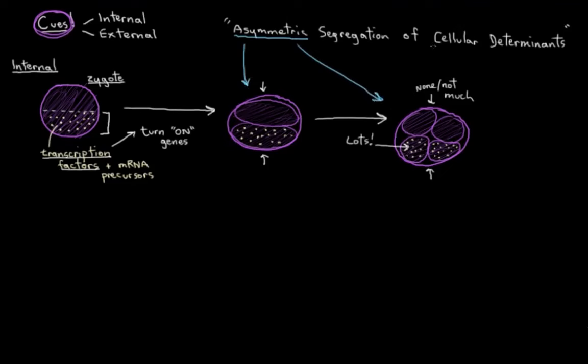And this cellular determinants bit is just referring to the transcription factors or their precursors. So that's one way that cells can be made to specialize into different things, just having different transcription factors around.